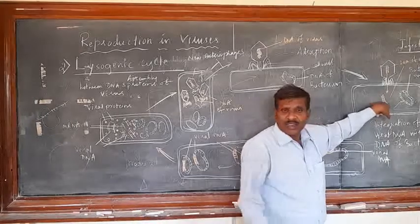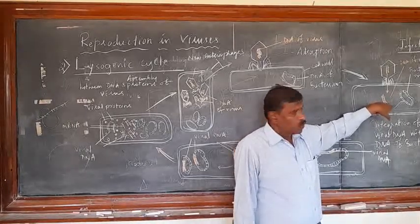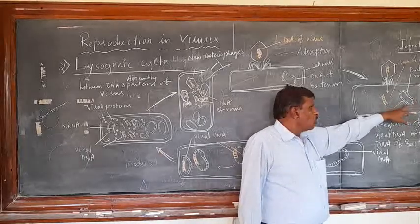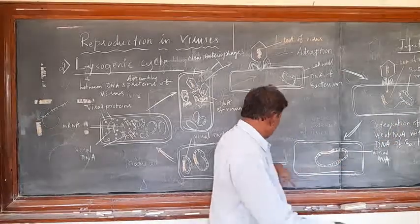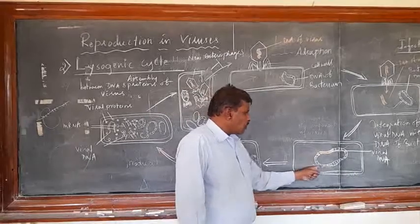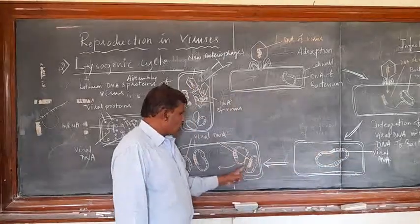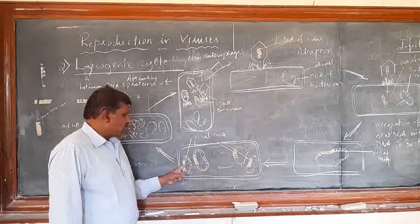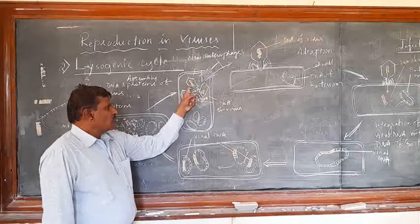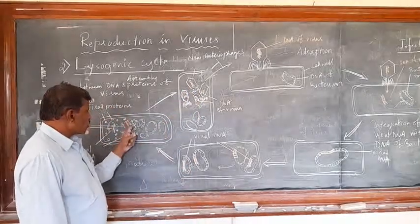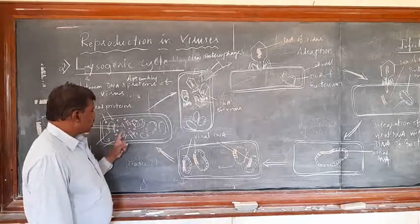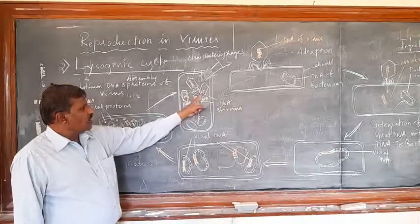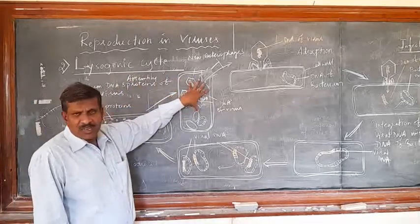Now this DNA can't replicate independently. I just told you, it integrates with a bacterial DNA or host cell DNA. Once it integrates with the host cell DNA, now replication occurs. As and when the replication of the host cell DNA occurs, along with that, DNA of the virus also duplicates. Later, this DNA of the virus is getting separated. It directs the synthesis of the mRNA. mRNA produces the viral proteins. Next, the assemblage between the viral proteins and the DNA of the virus takes place. So that new viruses are going to be constructed.